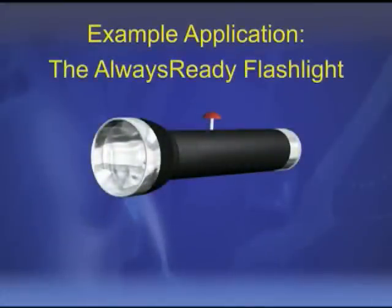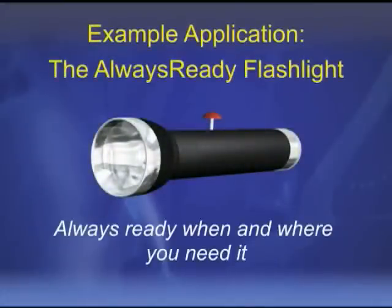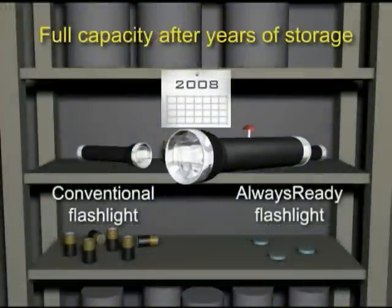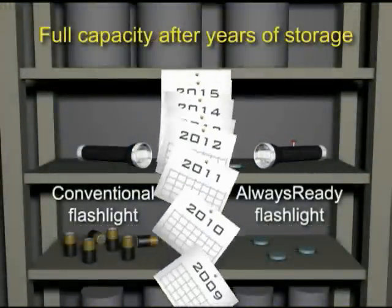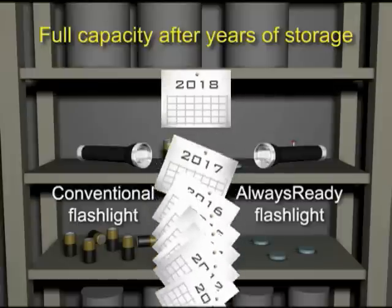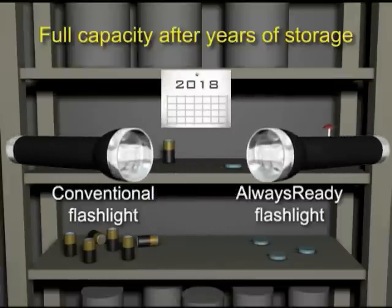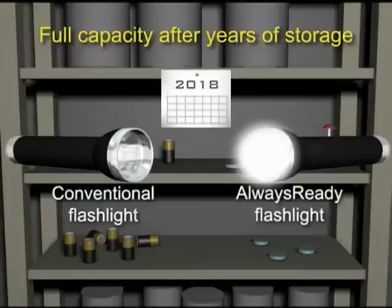One example of a common product that could benefit from this new type of battery is a flashlight. With the smart nanobattery inside, the flashlight could be stored indefinitely without any reduction in battery power during storage. This is an improvement over standard batteries, which lose power even when not in use. Upon user activation, the always-ready flashlight would function at full power as if brand new.